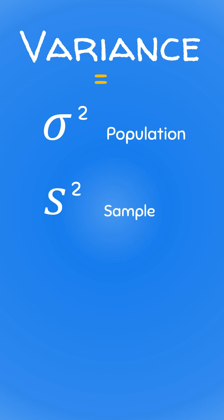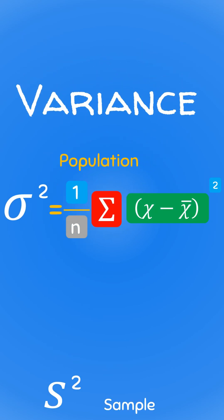The formula for computing the variance for a population is given by this, while that of the sample is given by this.